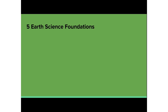There are five Earth Science foundations to learning. The first foundation is the characteristics of Earth materials such as sand, soil, rocks, water, and air. The child can use their senses to observe differences between these types of materials.